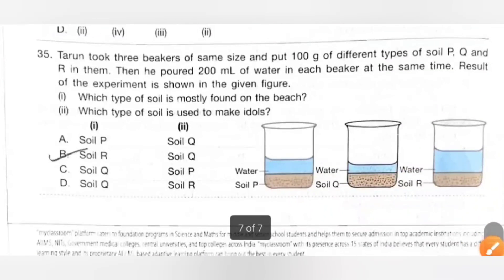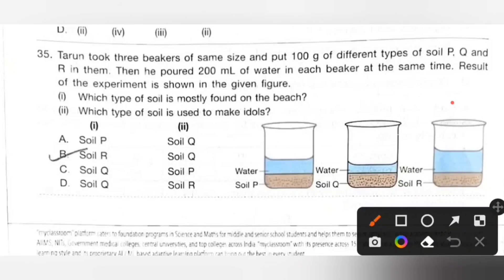Next last question: Tarun took three beakers of same size and put 100 grams of different types of soil P, Q and R in them. Then he poured 200 ml of water in each beaker at the same time. Result of the experiment is shown in the given figure. 1: Which type of soil is mostly found on the beach? 2: Which type of soil is used to make idols? To make idols we will use clayey soil, and we know clayey soil has high water holding capacity. So R is the clayey soil. Which type of soil is mostly found on the beach? That is sandy soil. Sandy soil has lots of air space between them, so it will absorb more water. So Q is the sandy soil. So 1 Q and then 2 R. So option D is the correct answer.